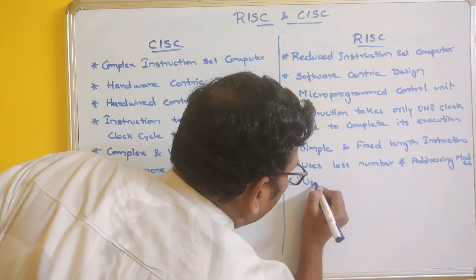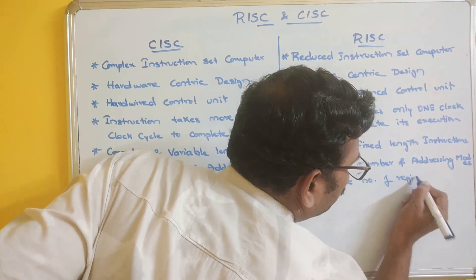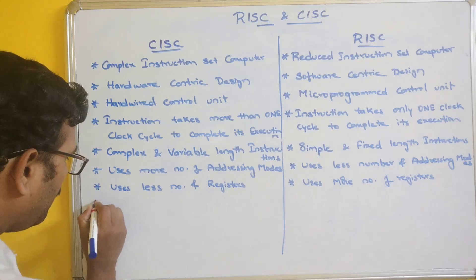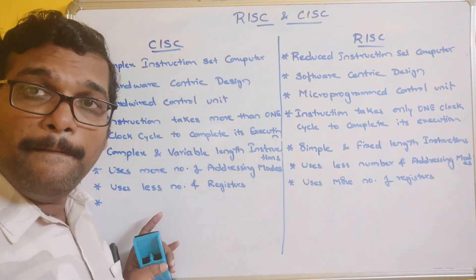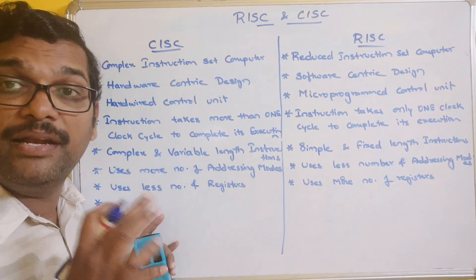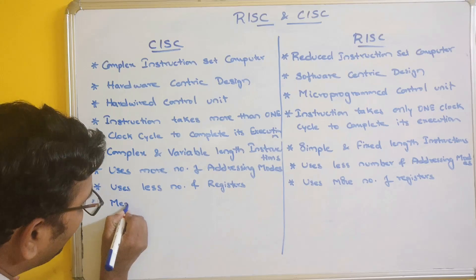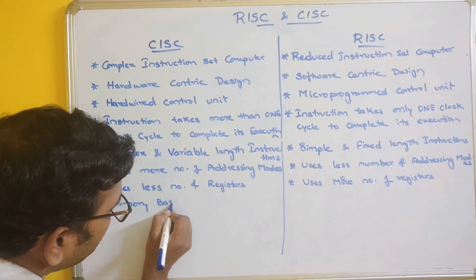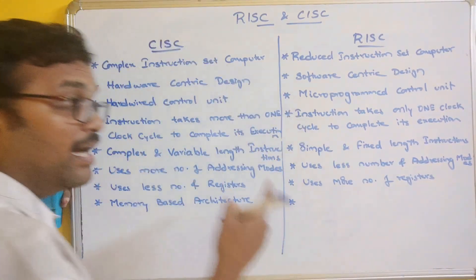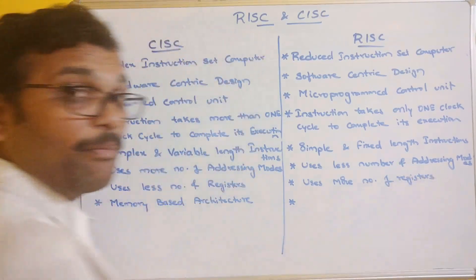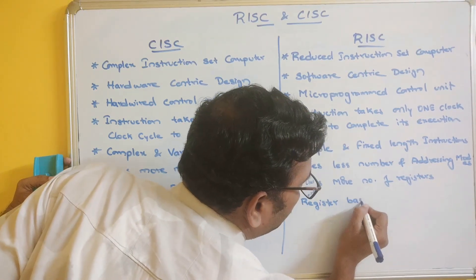RISC uses more number of registers, so it is called a register-based architecture. CISC uses less number of registers, so it is called a memory-based architecture. CISC requires less amount of memory — that means more efficient usage of memory, so less RAM is required. Whereas in RISC, more RAM is required.